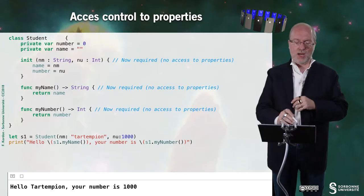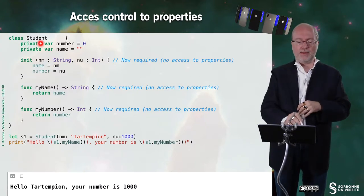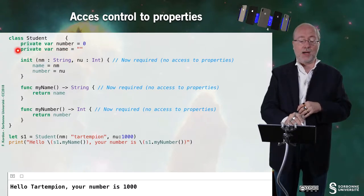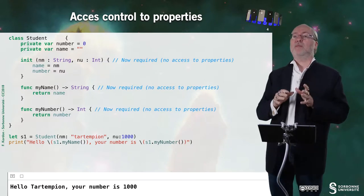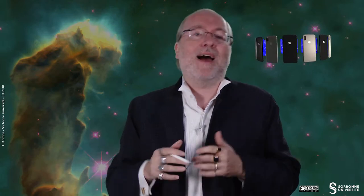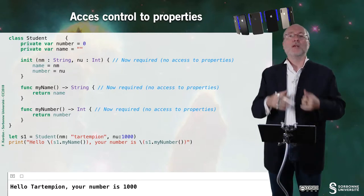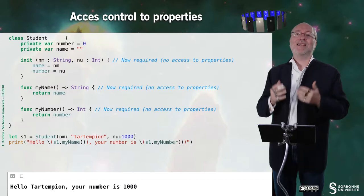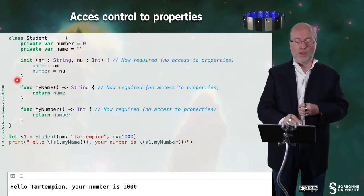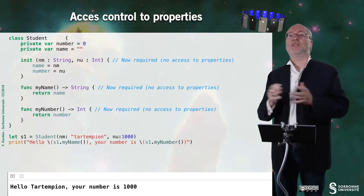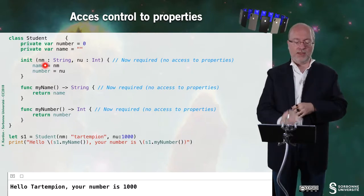So, now we can have control on the access to properties. Here, the difference with the previous version is that number and name are declared as being private. Private means that it's visible inside the scope of the class, but not outside. So I cannot access them from outside as I did previously. So here, I must provide at least some initializer to set these values as I do here.